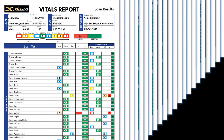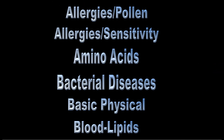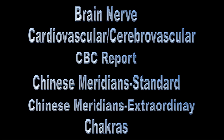The report identifies over 650 areas grouped in the following 47 categories: allergies and pollen, allergies and sensitivity, amino acids, bacterial diseases, basic physical, blood lipids, blood lipo, apolipoproteins, blood other, body reproductive function (male), bone and muscle condition, bone growth index, bone mineral density disease, brain nerve, cardiovascular, cerebral vascular, CBC report, Chinese meridians standard, Chinese meridians extraordinary, and chakras.